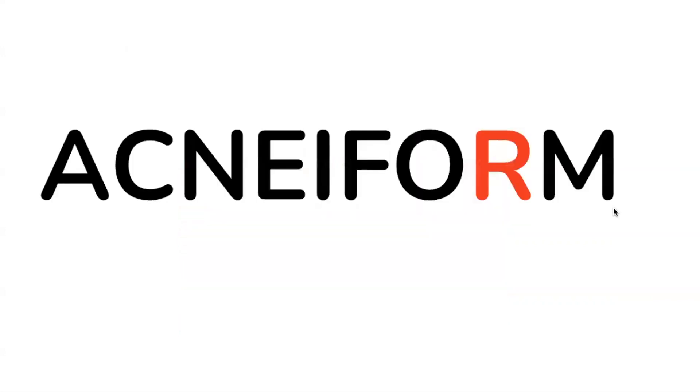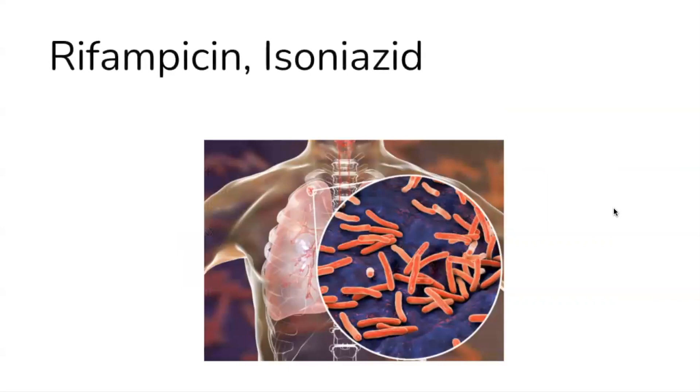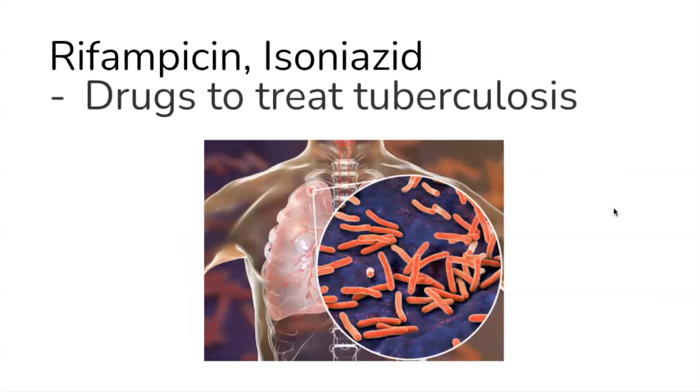R stands for rifampicin and isoniazid. These are medications which are commonly used to treat a lung infectious disorder called tuberculosis.